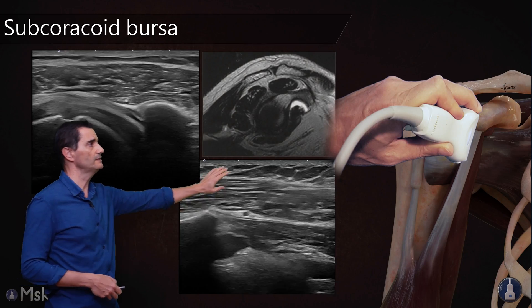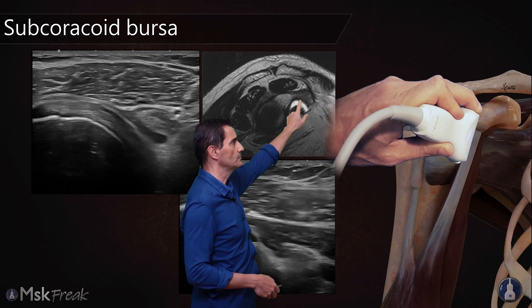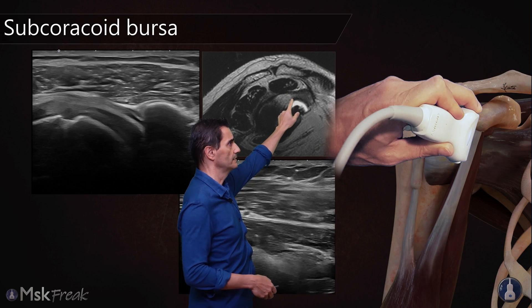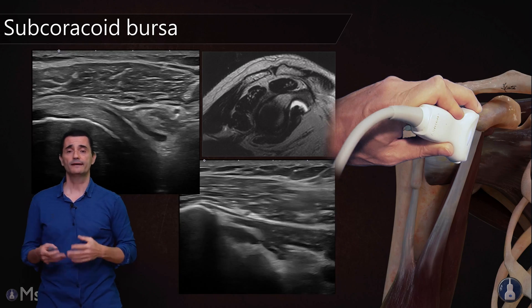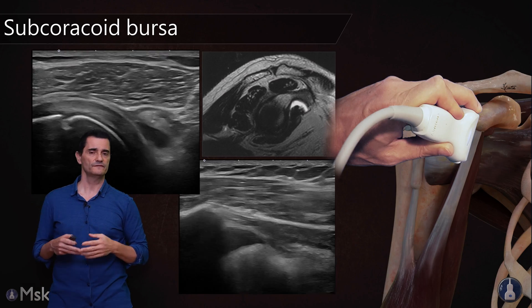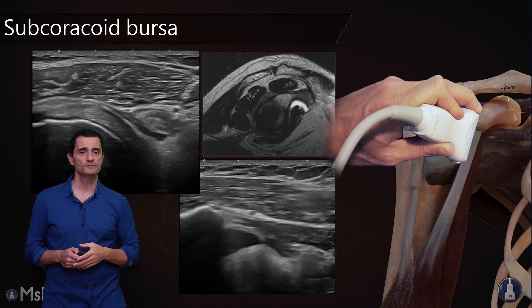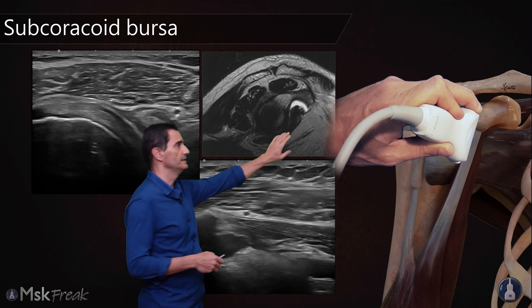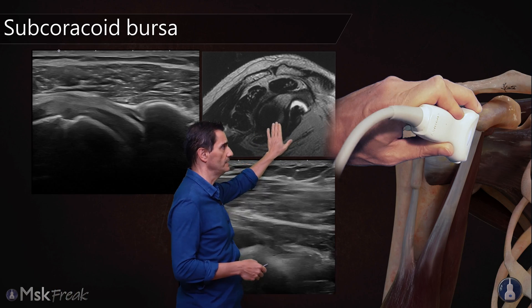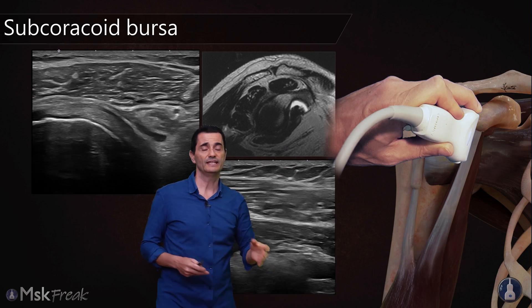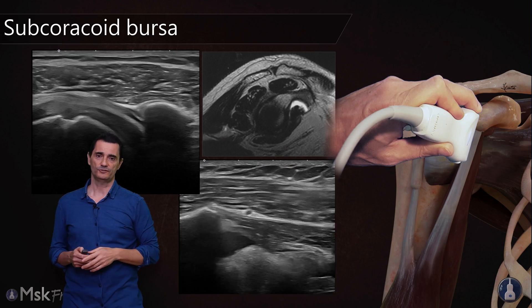You will understand better if you see the MRI. This is the subscapularis, and this is the subcoracoid bursa. I don't have examples of the subscapularis bursa because it's very difficult to see with ultrasound, but this bursa will be located deep to the subscapularis and slightly more medial, just in the anterior recess of the glenohumeral joint.